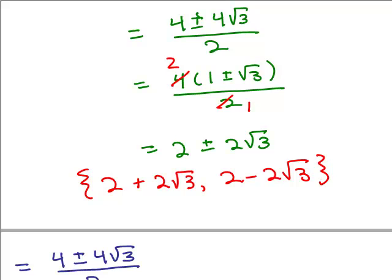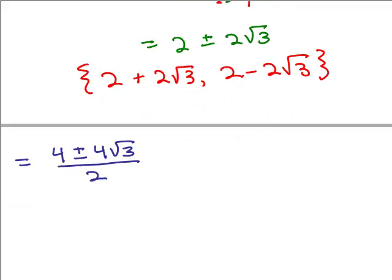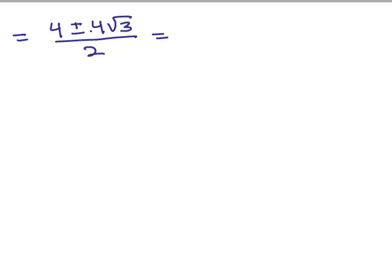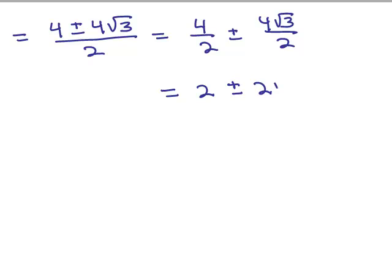Another way to simplify: since this is a fraction with a binomial in the numerator, you can put each term over the denominator. So 4 over 2 plus or minus 4 square roots of 3 over 2, then cancel each: 4 over 2 is 2, and 4 over 2 is also 2, giving 2 plus or minus 2 square roots of 3. That also works and gives the same answer.